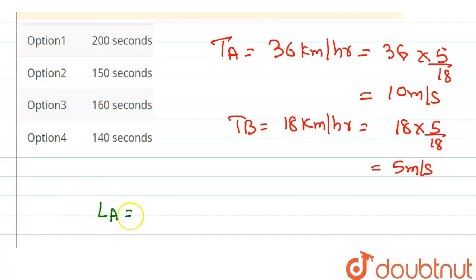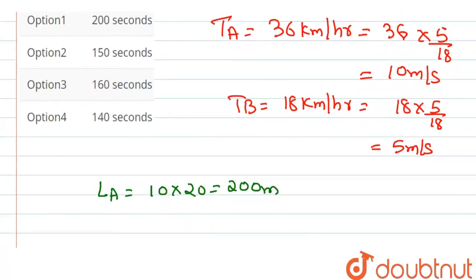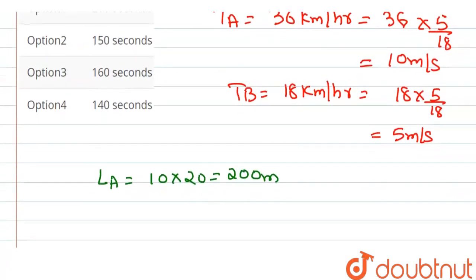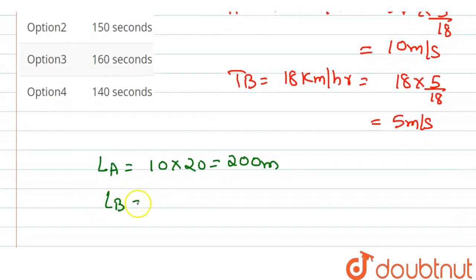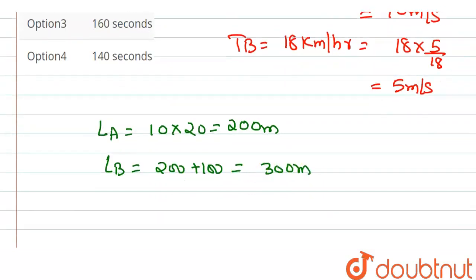Length of train A equals to 10 into 20, that is 200 meters.